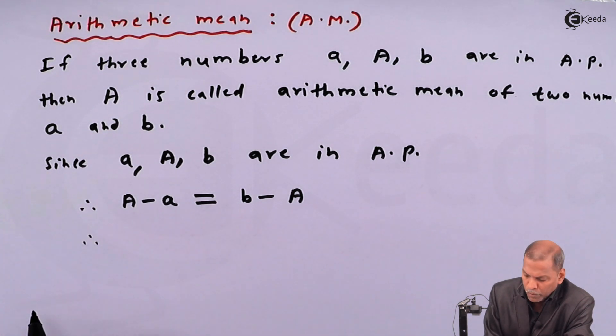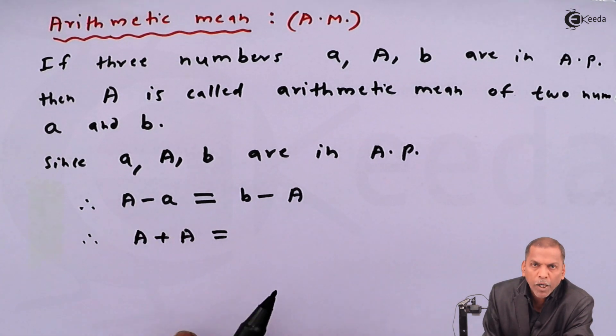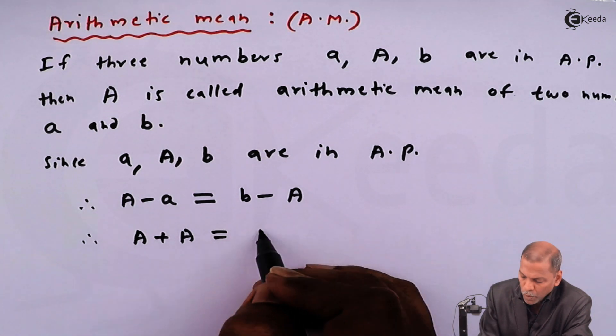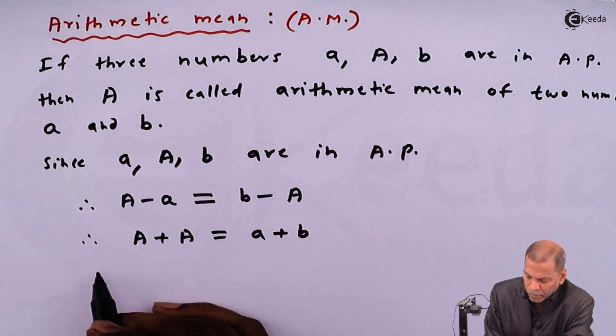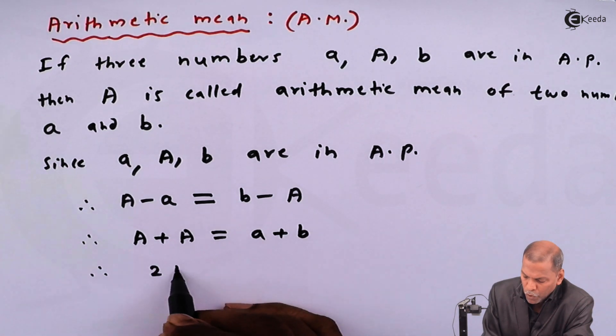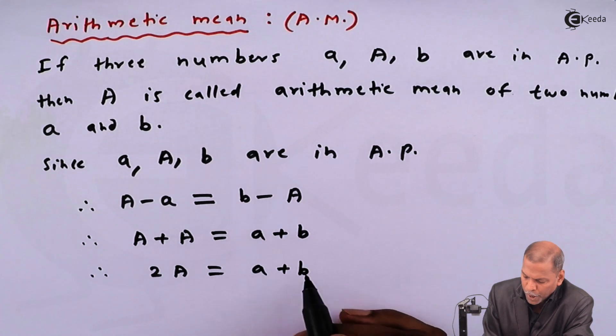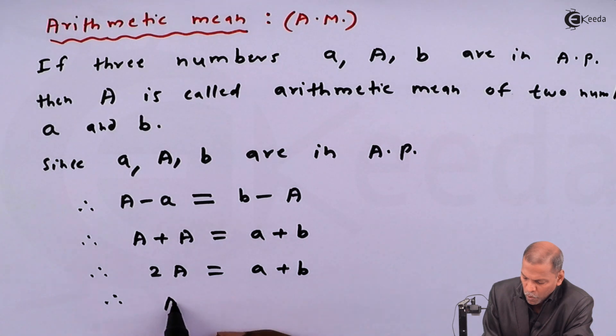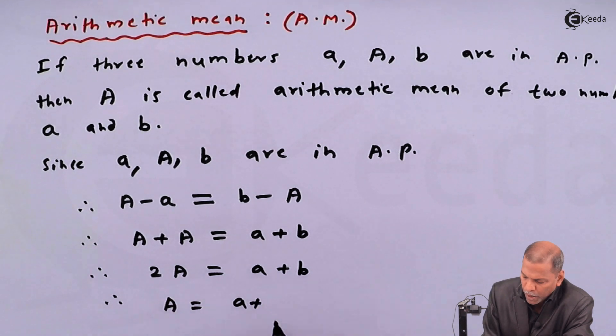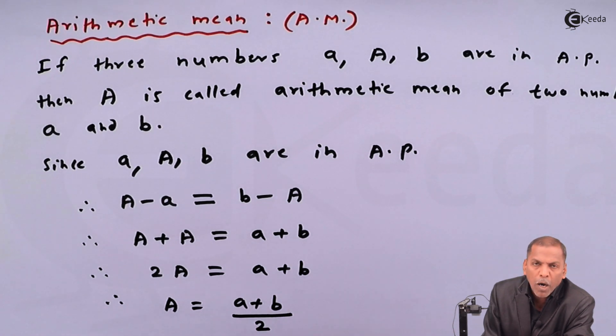Therefore, rearranging the term, we have capital A plus capital A is equal to small a plus small b. Therefore, 2 into capital A is equal to small a plus small b. And finally, we have capital A is equal to small a plus small b upon 2.